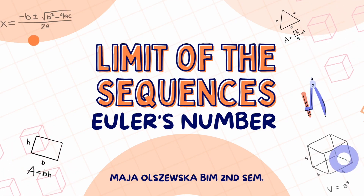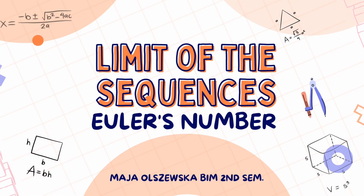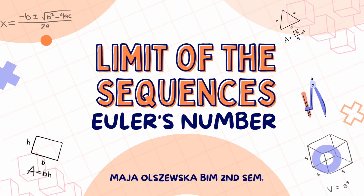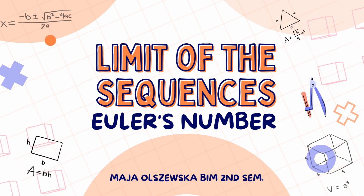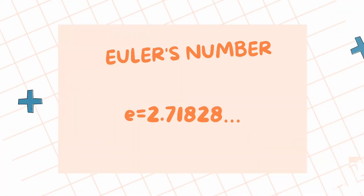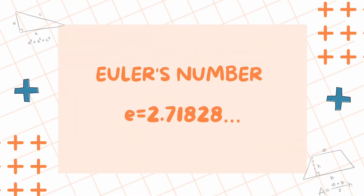Limit of sequences: Euler's number. The number E is known as Euler's number and it's a mathematical constant which is equal to 2.71828, where the digits go on forever in a series that never ends or repeats.